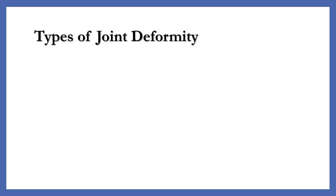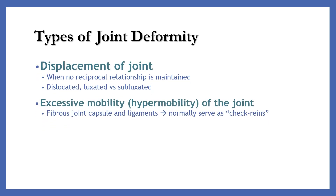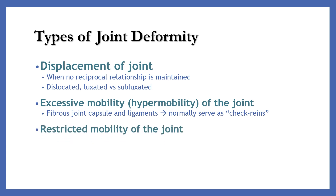Types of joint deformity. There are displacement of the joint, excessive mobility of the joint, and restricted mobility of the joint. Displacement of the joint is when no reciprocal relationship is maintained, and can be dislocated, luxated, or subluxated. Excessive mobility or hypermobility of the joint occurs when the fibrous joint capsule and ligaments, which normally serve as checked reins, are compromised. The last type is restricted mobility.